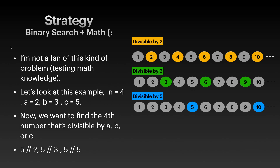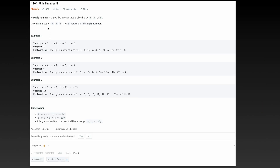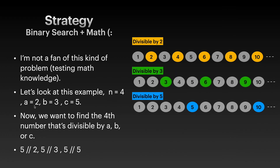I'll use the example where n equals 4. We want to find any number that is divisible by 2, 3, or 5, and we want to find the fourth such number. My plan is to use binary search: low will be 1, high will be 10, and the middle number will be 5. Then we want to know how many numbers are divisible by 2, 3, or 5 up to and including 5.